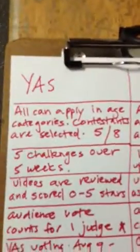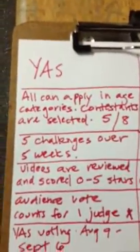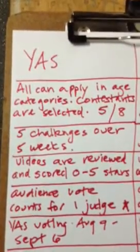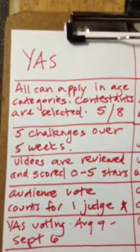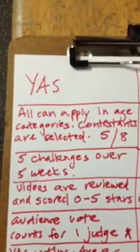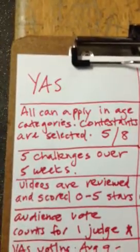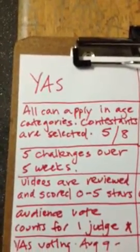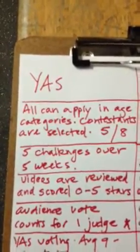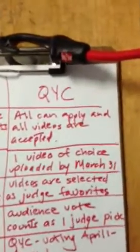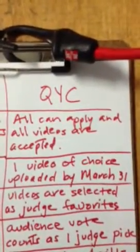The Young Artist Showcase: all can apply in the specific age categories, and contestants are selected — there are five Grassroots contestants and eight Champions contestants. In Quest for Creativity, all can apply and all videos are accepted.